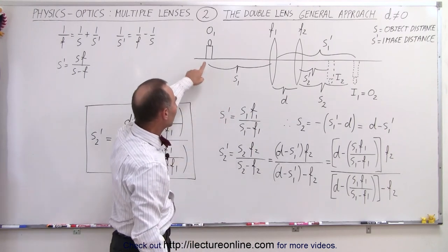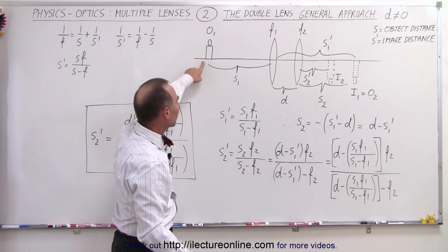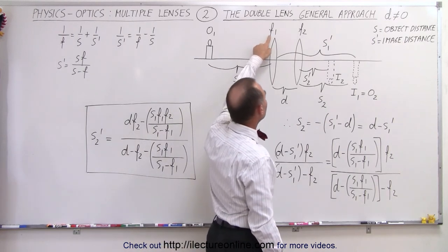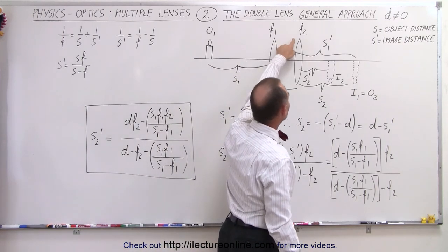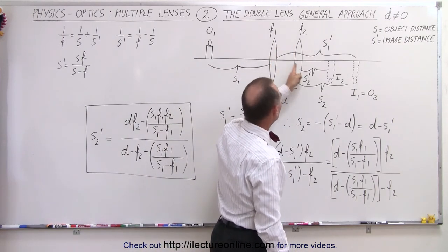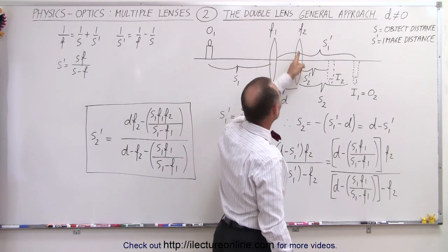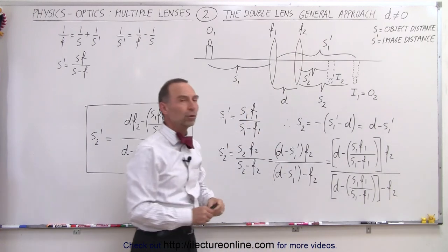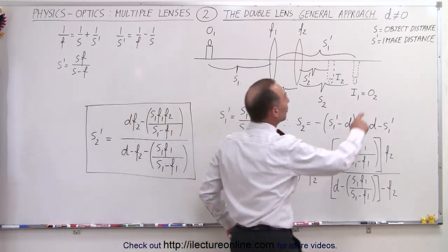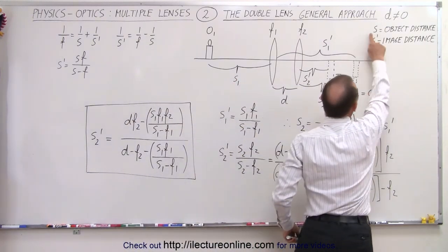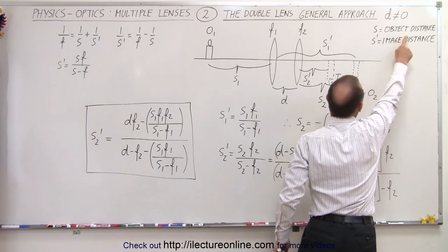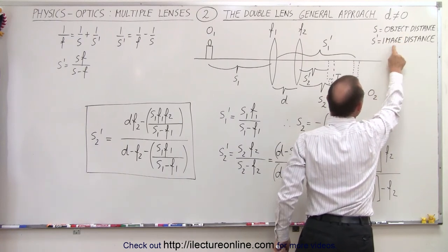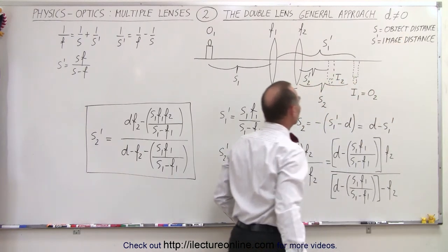Let's say we place an object to the left of the first lens, which has a focal length of f1, and we have a second lens a distance d away from the first lens with focal length f2. Notice the nomenclature: s means the object distance and s' means the image distance.